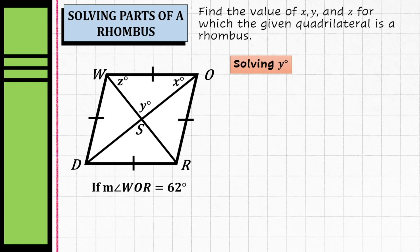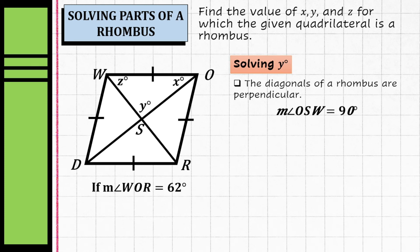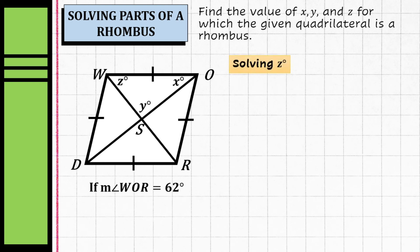Now let's solve for y using the property that the diagonals of a rhombus are perpendicular. The measurement of angle OSW equals 90 degrees, so y equals 90 degrees.